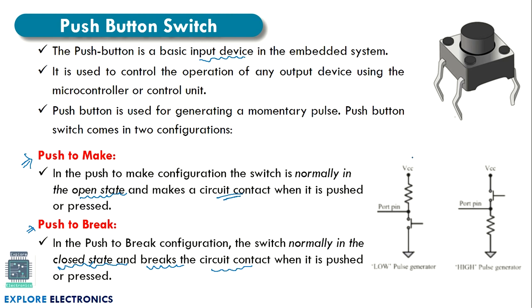There are two small circuits to observe. Consider the microcontroller where we are passing some value using the push button. This is VCC and this is ground. When the switch is closed, the microcontroller port input pin will be connected to ground, passing a zero value. If we connect the same push button to VCC, the microcontroller receives a one. The first configuration is called a low pulse generator and the second is called a high pulse generator.